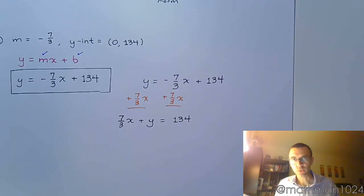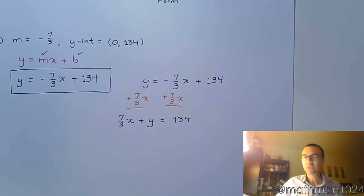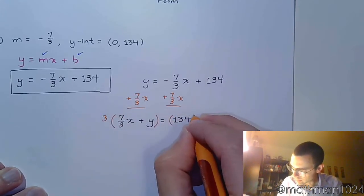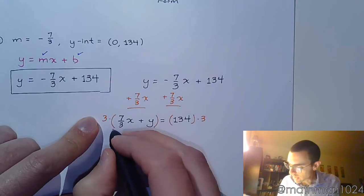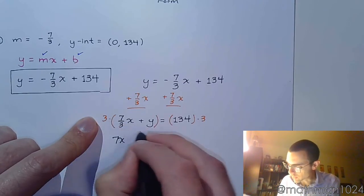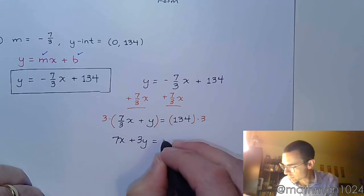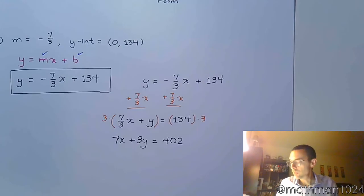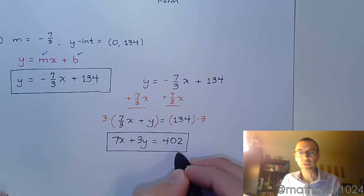So when we do that, we have 7 thirds x plus y equals 134. So we just mentioned there are two things we don't want to see for standard form. We don't want to see a leading negative coefficient, so we're good there. But we also are not supposed to see fractions, so we need to clear the fraction away. We're going to multiply everything here times that LCD of 3. So when I do that, these 3s are going to reduce, and I'm left with 7x, and then 3 times y is just 3y. 3 times 134 gives us 402. So there's slope-intercept form. There's standard form, and you just have to figure out which one is going to be best for you.